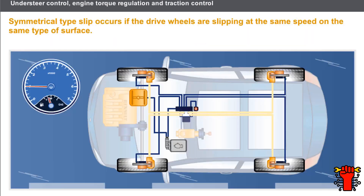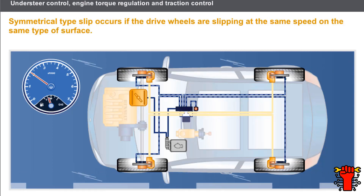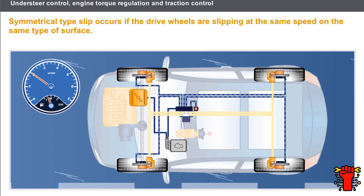Symmetrical type slip occurs if the drive wheels are slipping at the same speed on the same type of surface. The computer for the electronic stability program sends a command to the injection computer to reduce the engine torque. The request is maintained until traction is re-established.